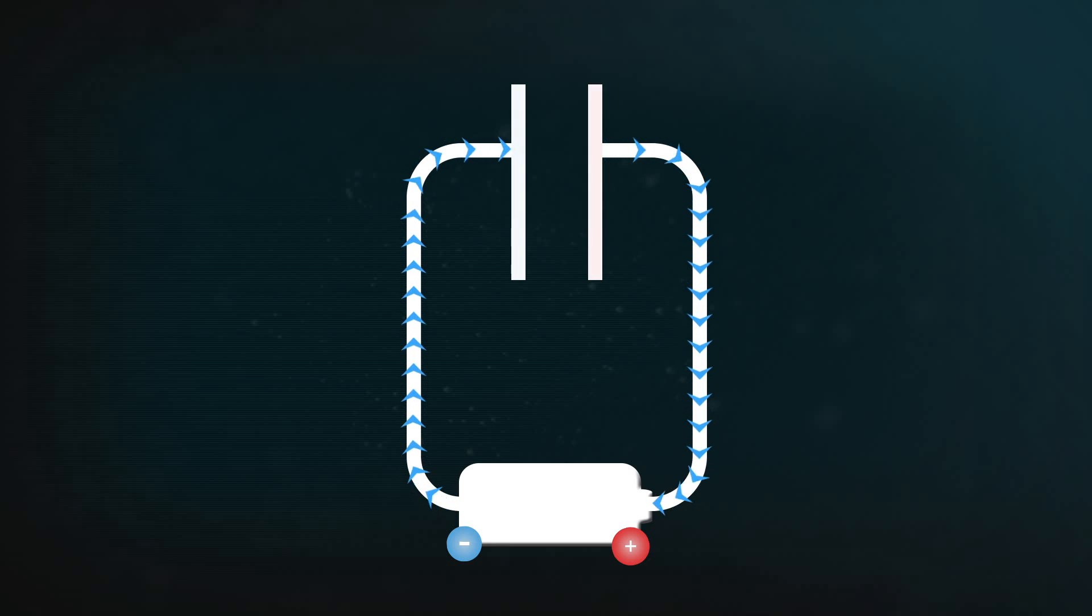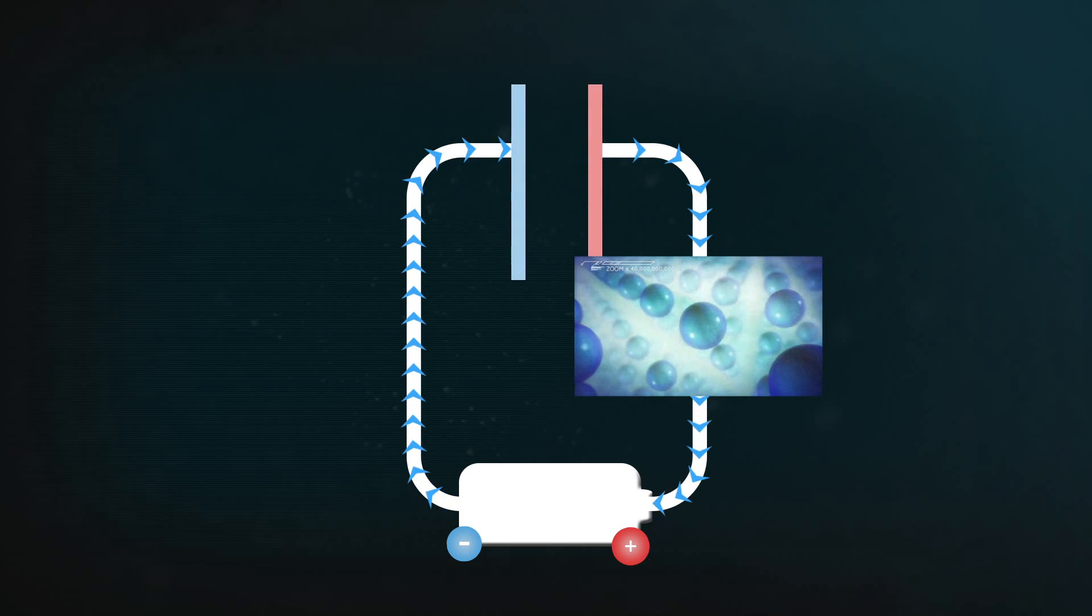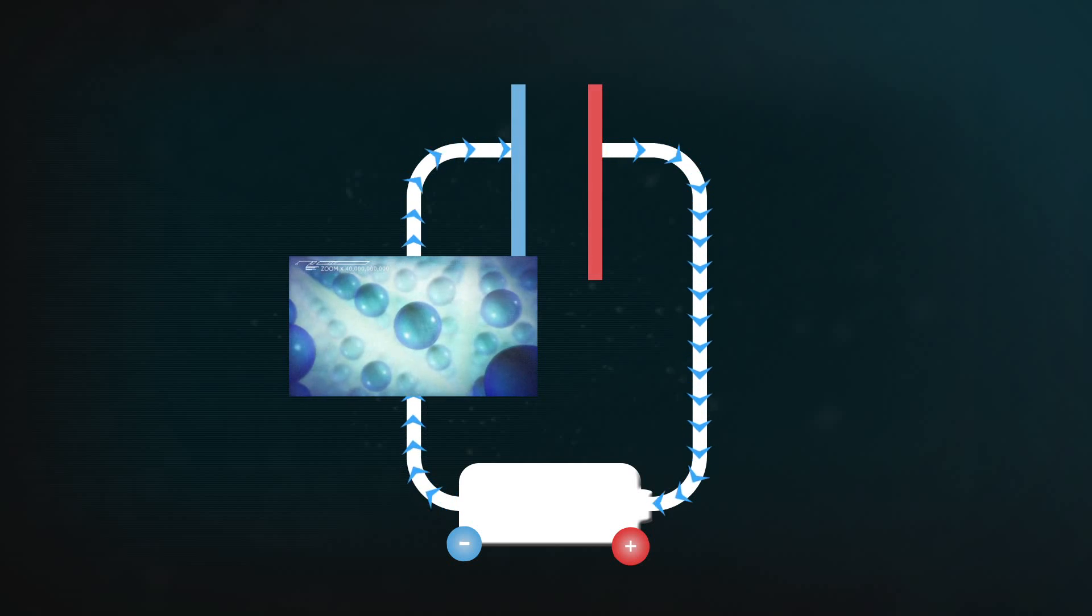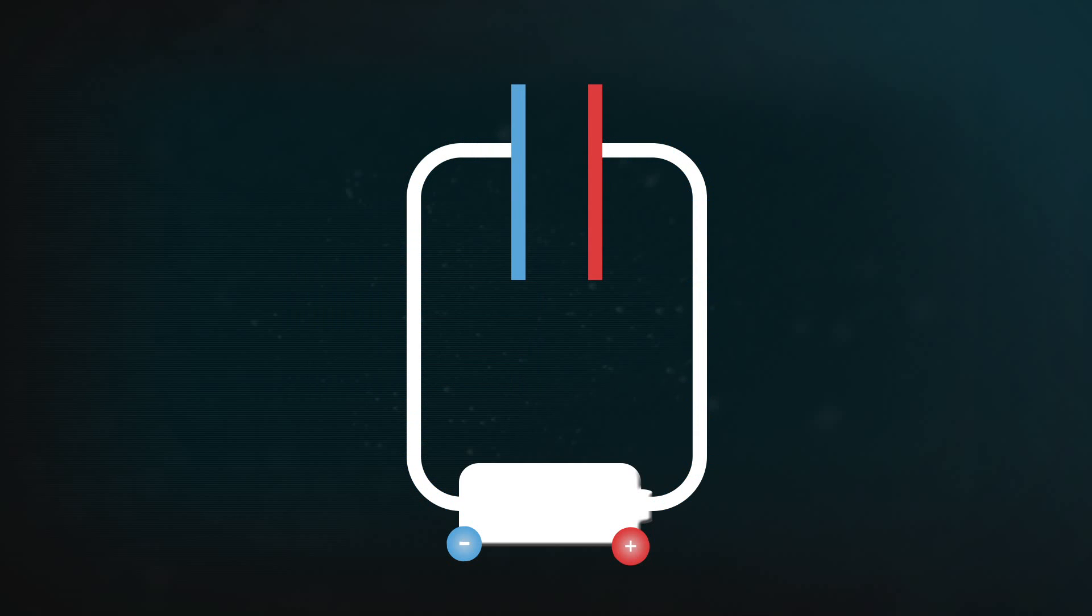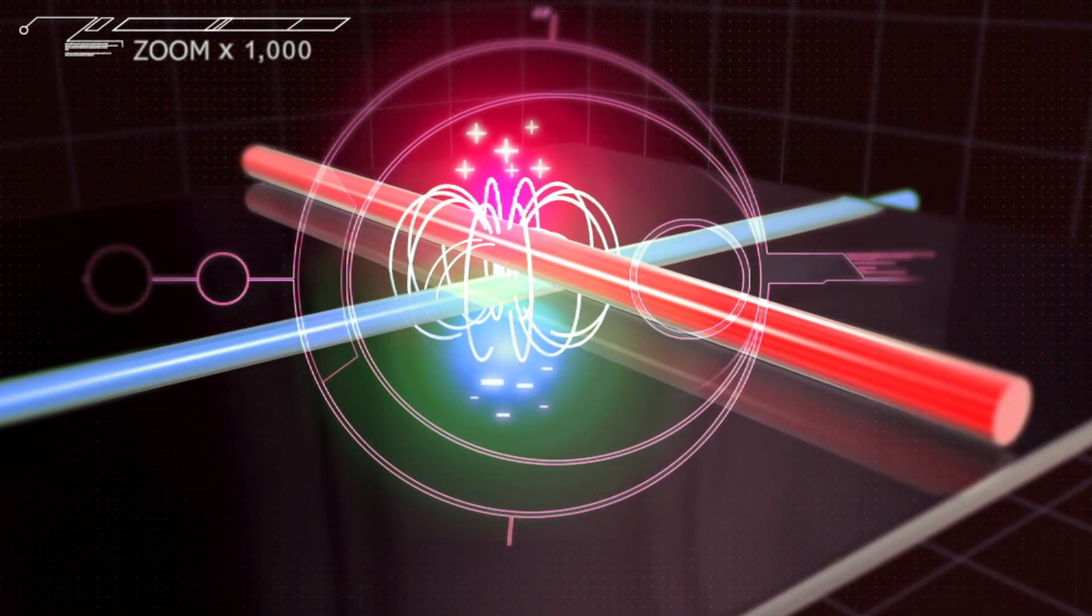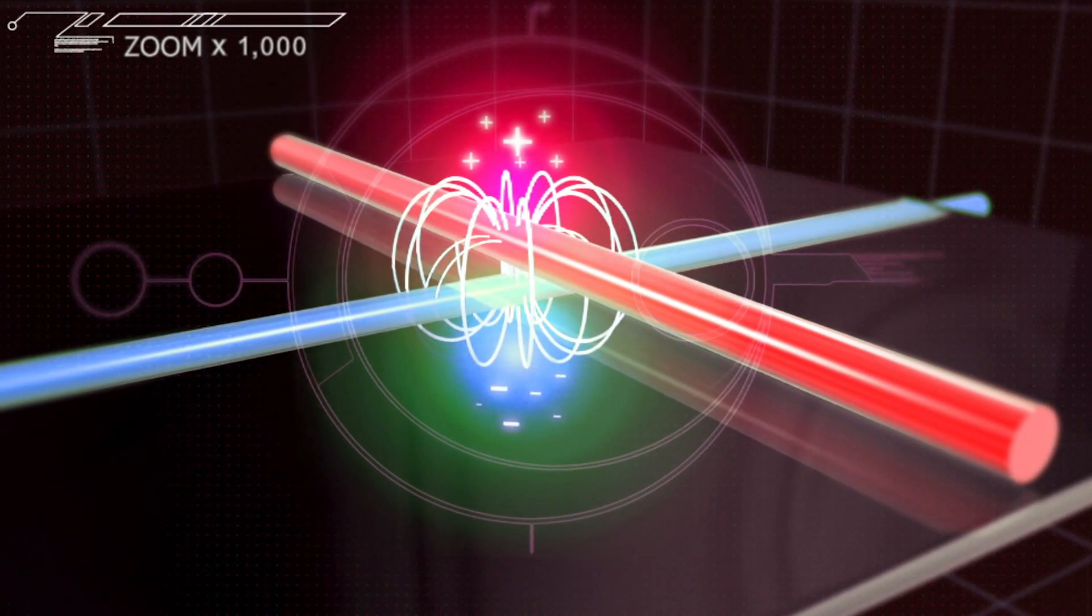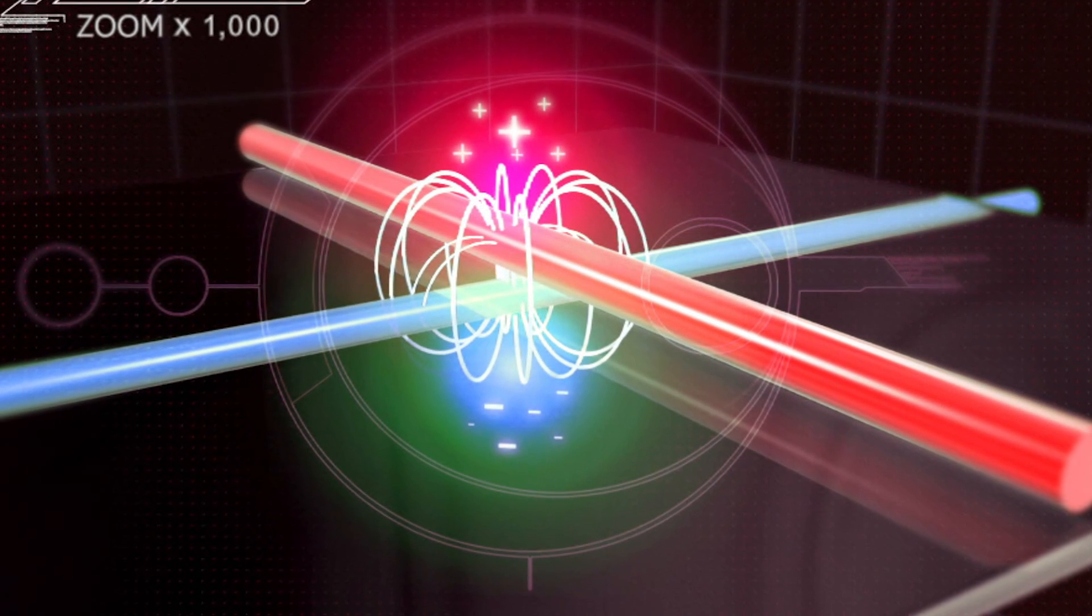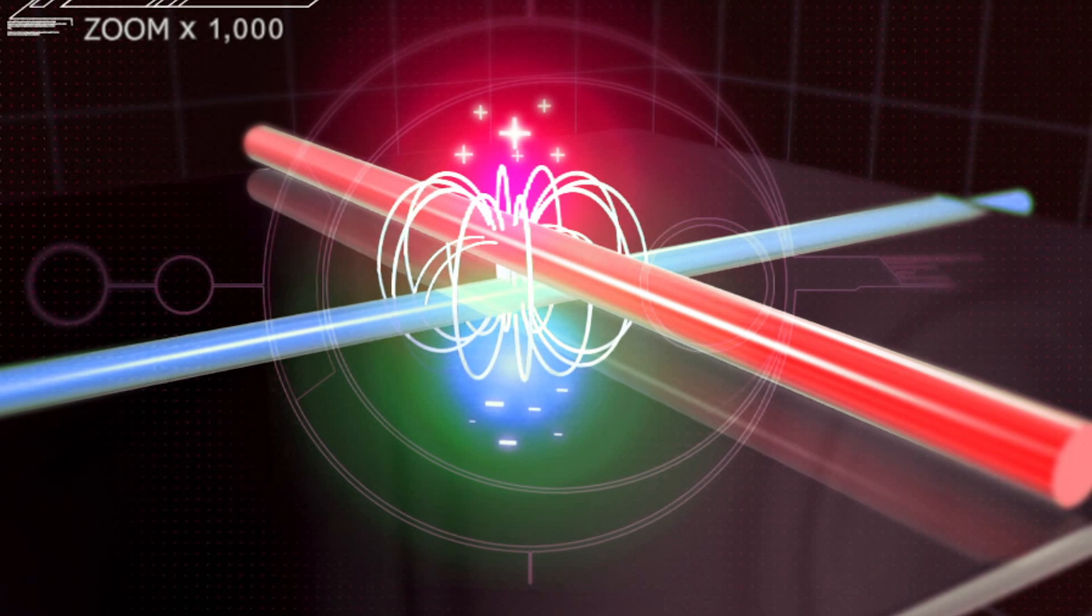One of the wires becomes positively charged because the phone battery's positive terminal sucks electrons out of it. The other wire becomes negative because the battery's pumping electrons into it. The wires are separated by the sheet of glass. And whenever positive and negative charges are separated, you get an electric field. And it's strongest where the charges are closest, where the wires cross over.